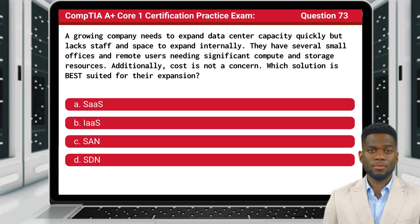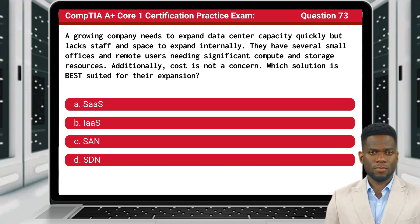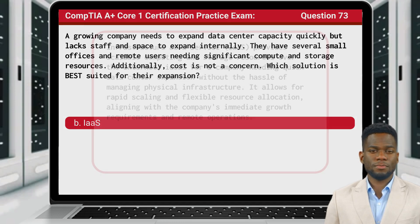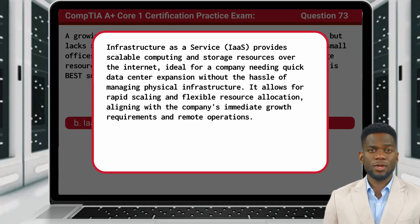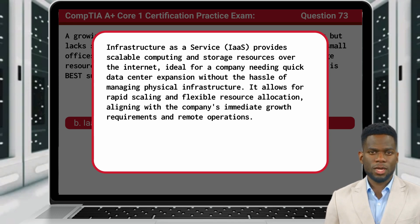Question 73. A growing company needs to expand data center capacity quickly but lacks staff and space to expand internally. They have several small offices and remote users needing significant compute and storage resources. Additionally, cost is not a concern. Which solution is best suited for their expansion? The answer is B: IaaS. Infrastructure as a Service provides scalable computing and storage resources over the Internet, ideal for a company needing quick data center expansion without the hassle of managing physical infrastructure. It allows for rapid scaling and flexible resource allocation, aligning with the company's immediate growth requirements and remote operations.